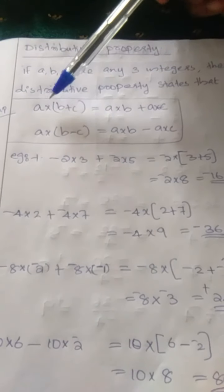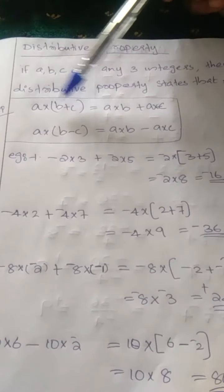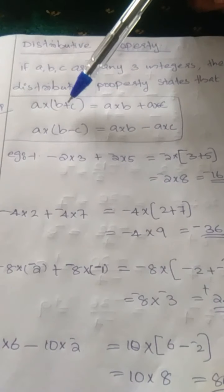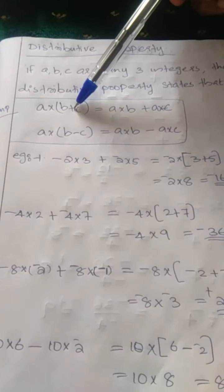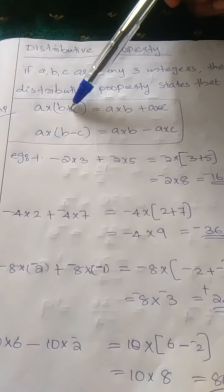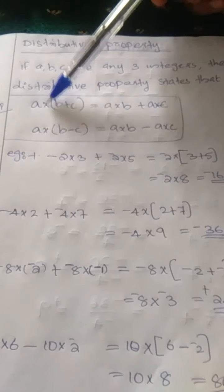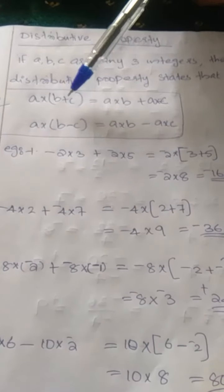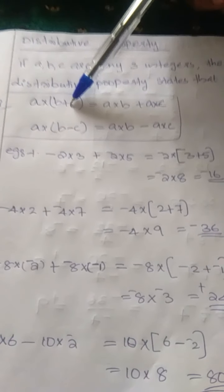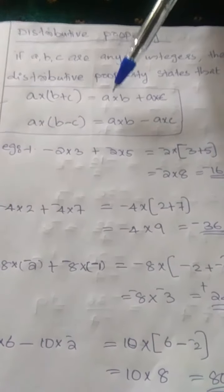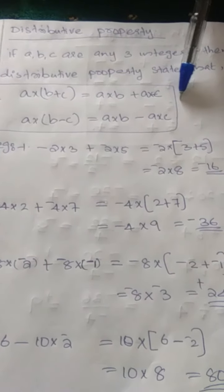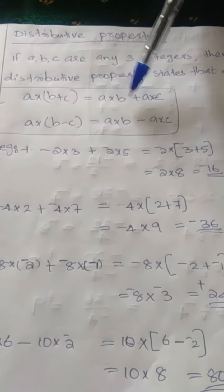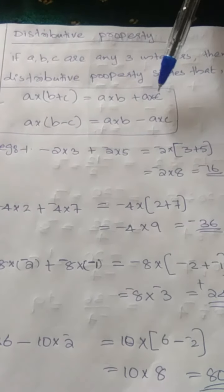In this case we have two operations together: multiplication and addition. If we get a question with two operations — first multiplication and next addition — you can multiply by splitting the numbers. That is: A into (B plus C) equals A into B plus A into C.